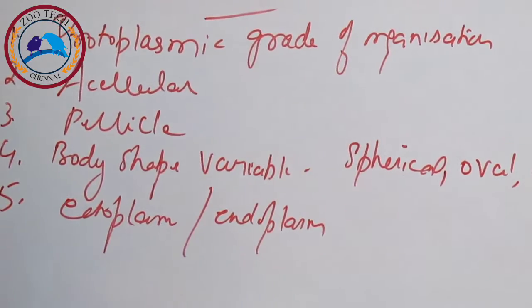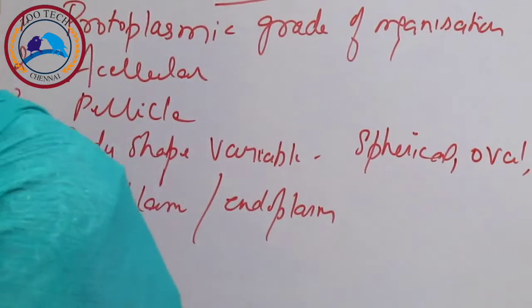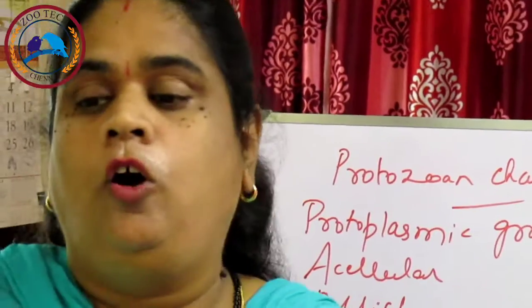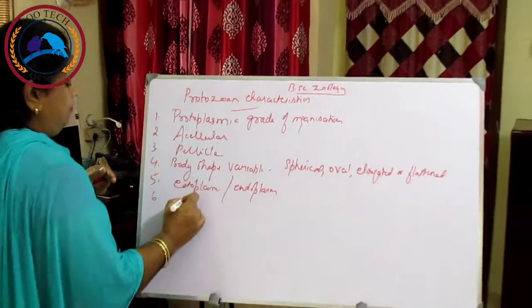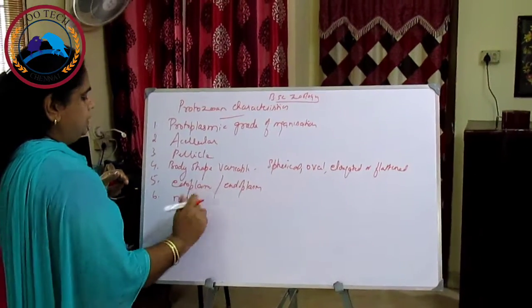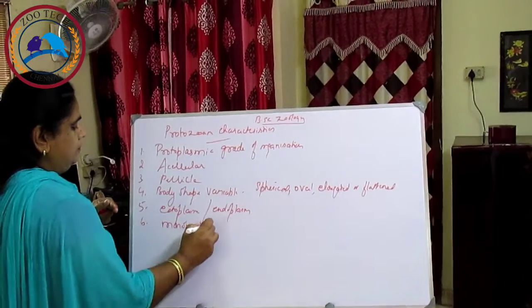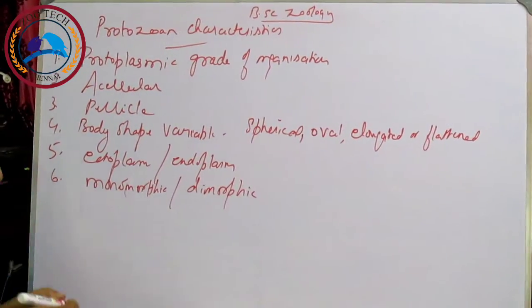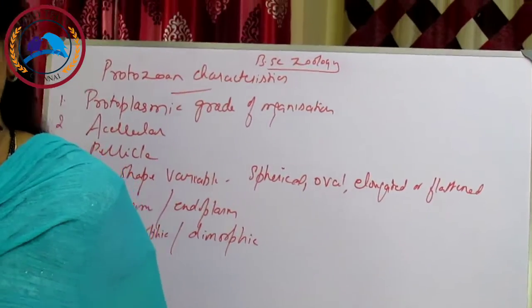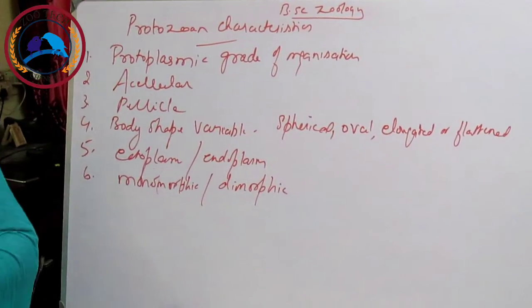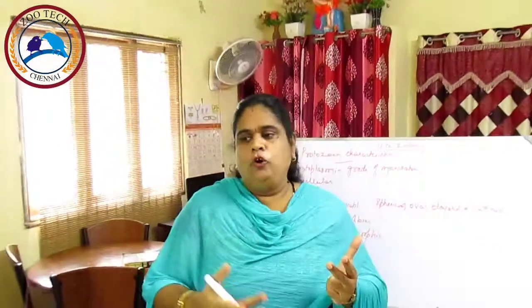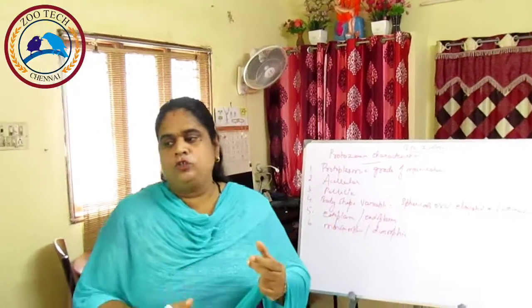Protozoans have one or more nuclei; they may be mononucleate or binucleate. The locomotory organelles are pseudopodia — that is, false feet — flagella, cilia, or none. Nutrition may be holozoic, holophytic, saprozoic, or parasitic.